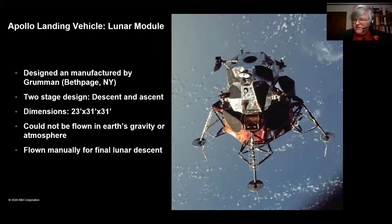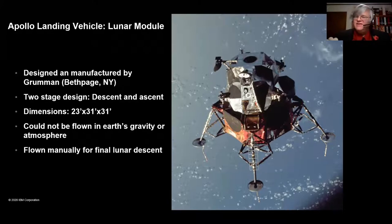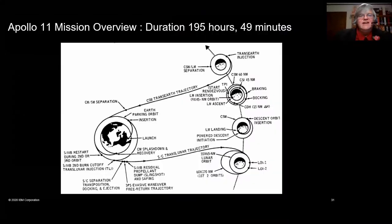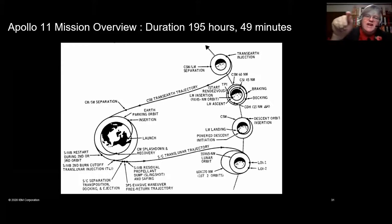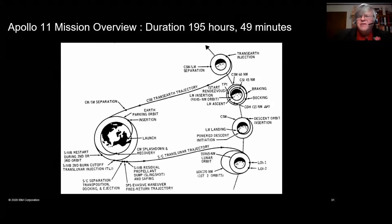The lunar module was flown manually during final descent. I'm sure all of us have heard stories about the 1201 and 1202 alarms. Training is so essential that when something goes wrong, you have to know how to react, and thankfully the crew of Apollo 11 knew how to react. The mission: you launch, go around the Earth a few times, branch off to the Moon in trans-lunar injection, circle the Moon, then leave in what's called trans-Earth insertion and come back to Earth. It looks so simple on paper and was one of the most complex engineering feats ever attempted.